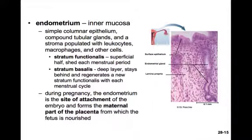The endometrium is the inner mucosal layer, composed of simple columnar epithelium and compound tubular glands. The stroma is populated by leukocytes, macrophages, and other cells to keep it clean. The stratum functionalis is the superficial half that is shed during a menstrual period. The stratum basalis is the deeper layer that regenerates the new stratum functionalis with each menstrual cycle. During pregnancy, the endometrium is the site of embryo attachment and becomes the maternal part of the placenta.